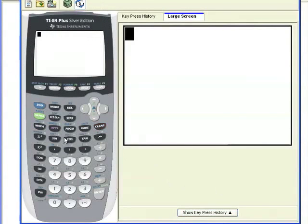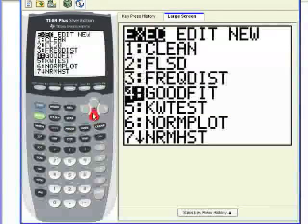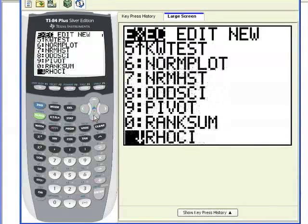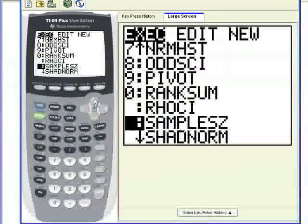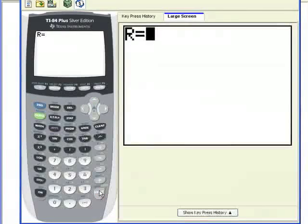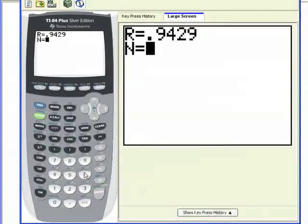In the calculator, go to program and we're going to look for rho CI, there it is. Rho CI, confidence interval for rho. Select it, run it, r .9429, enter.